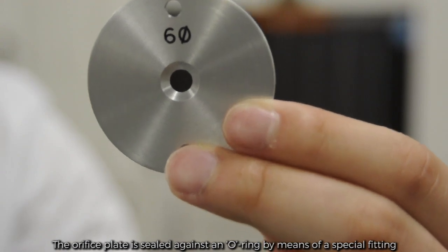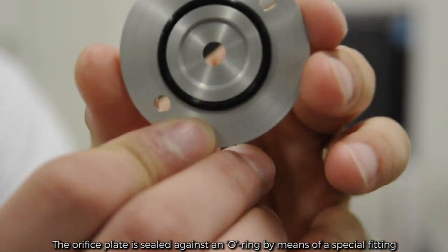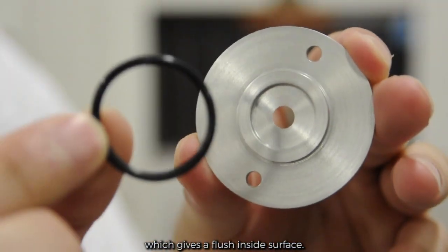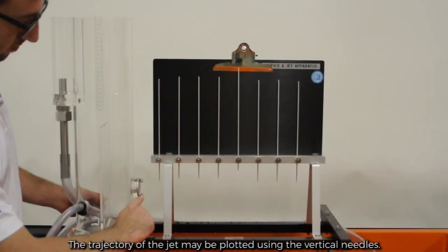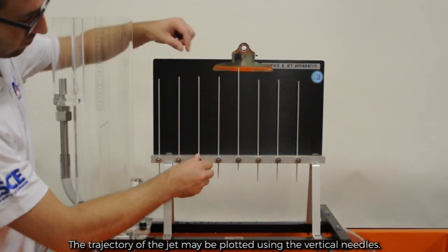The orifice plate is sealed against an O-ring by means of special fitting which gives a flush inside surface. The trajectory of the jet may be plotted using the vertical needles.